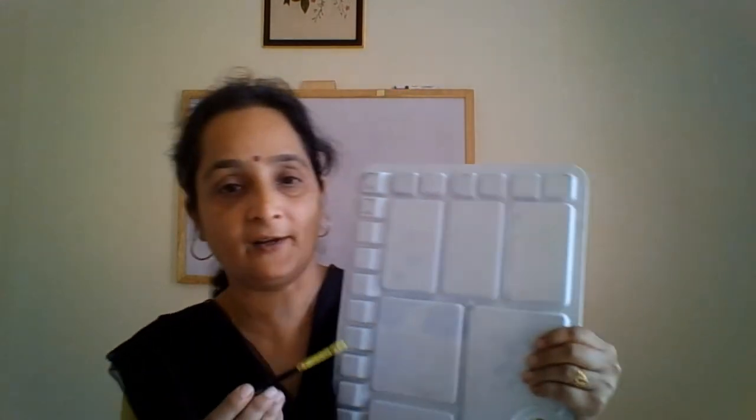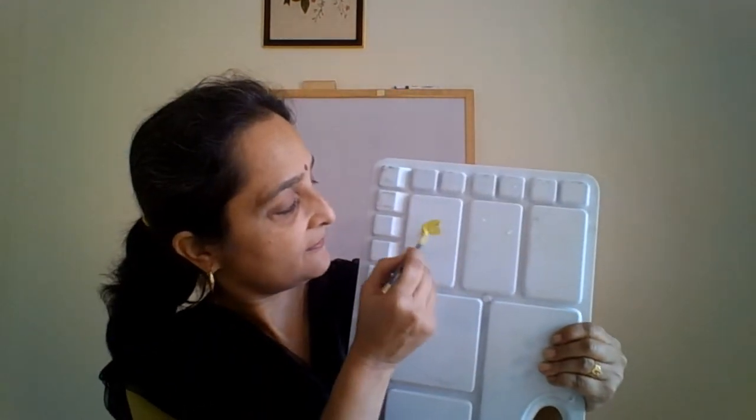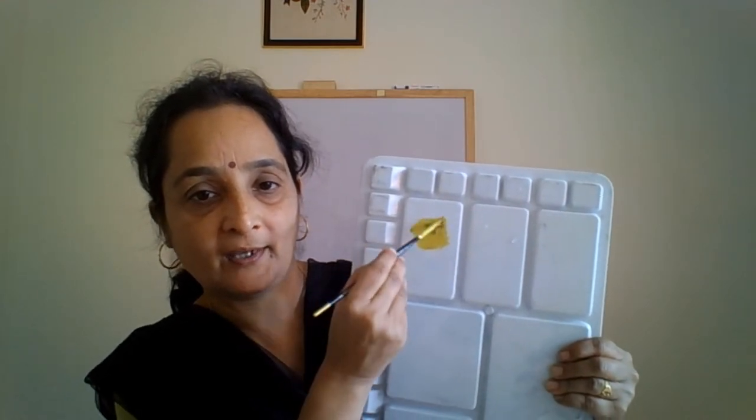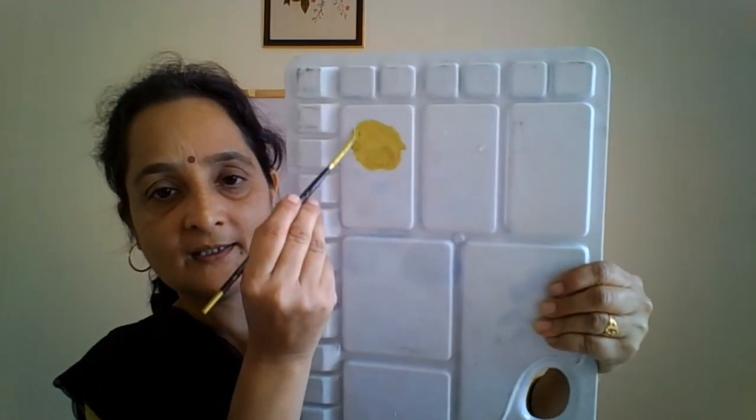So let's see how the first secondary color is formed with the help of red and yellow. I have a palette — let me show you. Let us take yellow color first. See children, I am painting this yellow. Can you see it? Yellow.